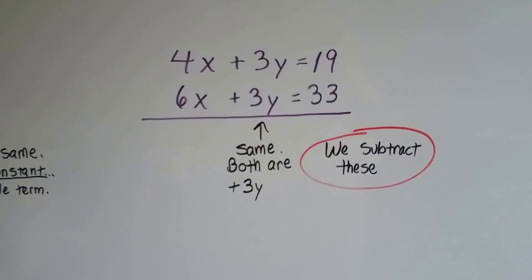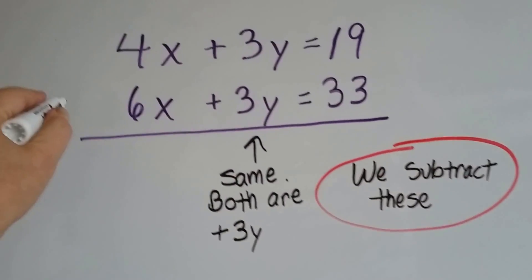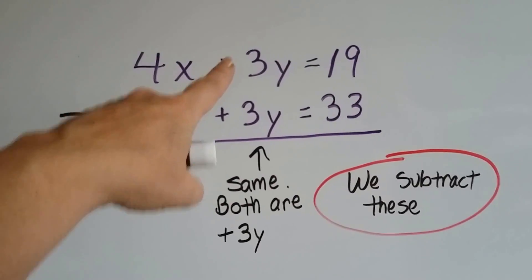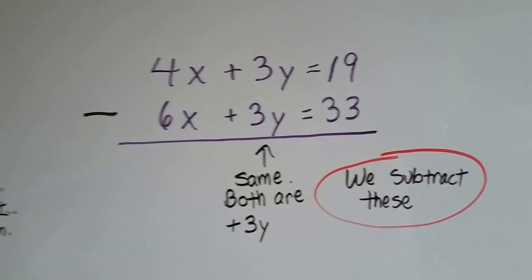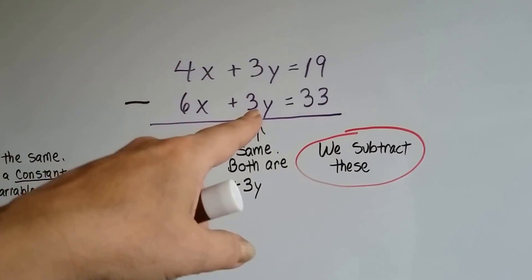Let's take a look at this one. They both have a positive 3y, don't they? So we would subtract these. And if they were both negative 3y, then we would subtract that. So it doesn't matter if they're both negative or both positive, as long as they're identical.